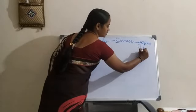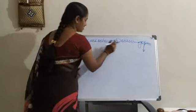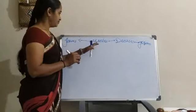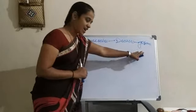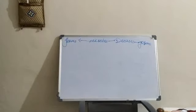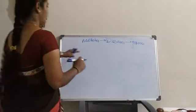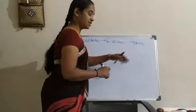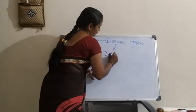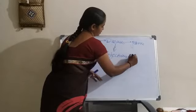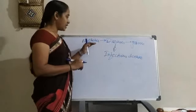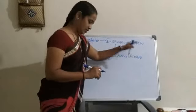Microbes which cause diseases are called germs. The diseases which are caused by germs are called infectious diseases. The microbes which cause diseases are called germs, and the diseases caused by germs are called infectious diseases.